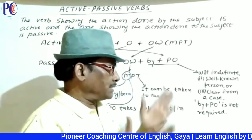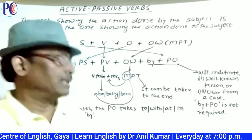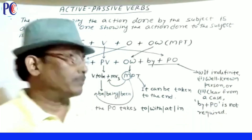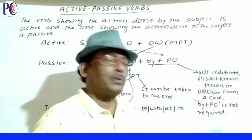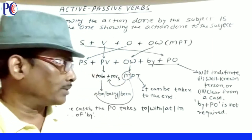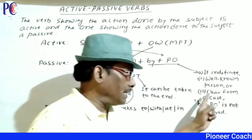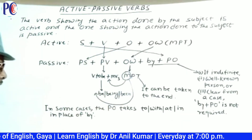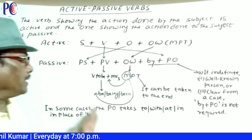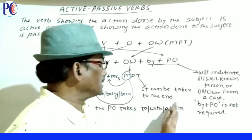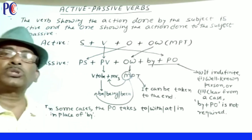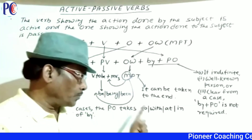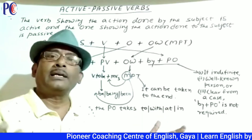We do not give 'by + passive object/agent' when the passive object is an indefinite person — someone, indefinite, people, they — or a well-known person doing their basic job, such as police arresting or a doctor treating, or when it is clear from the context. In some cases, passive verbs take 'to', 'with', 'at', or 'in' in place of 'by'.